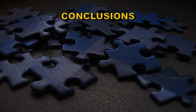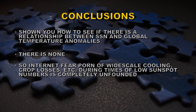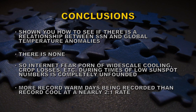Let's draw some conclusions. I've shown you how to check whether there is any relationship between sunspot number and global temperatures — and we found that there is none. So all the internet fear about wild-scale cooling, crop losses, and so on during times of low sunspot number is completely unfounded. We still have a warming planet, with more record warm days being set than record cool days at nearly two to one. So when you hear people spouting about global cooling and little ice ages, you know it's nonsense. Post a link to this video and tune to another channel. Until next time, goodbye.